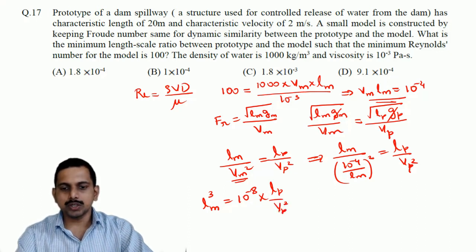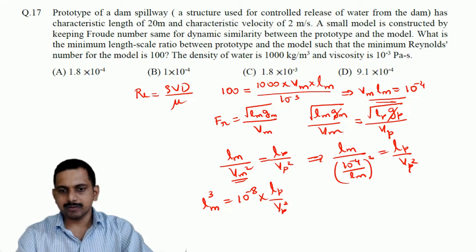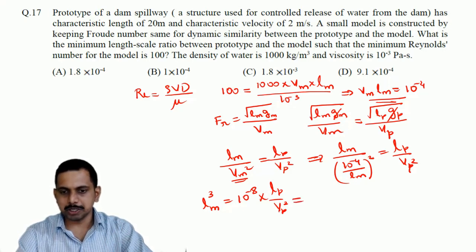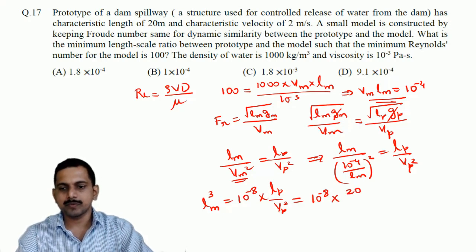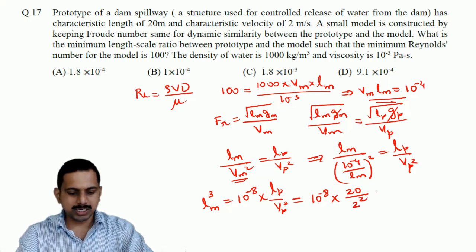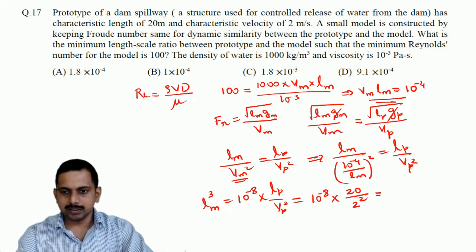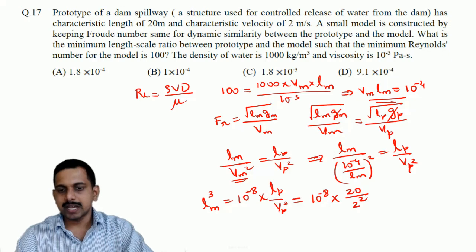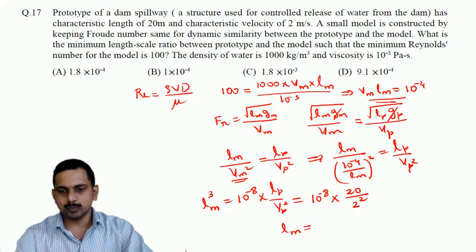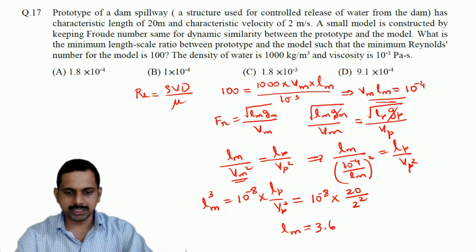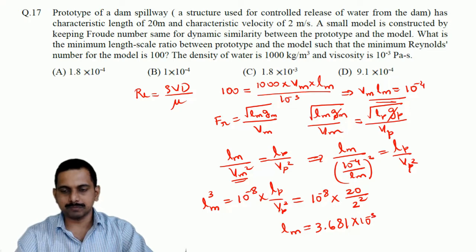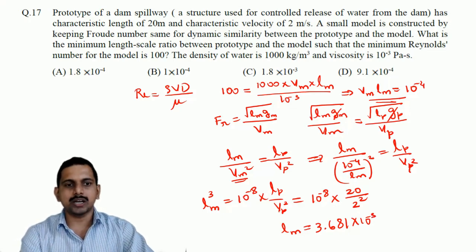So now by this we can write, let us substitute the things: 10 power minus 8, what is L P? L P of the prototype is 20 meters. What is V P? 2 meters square. When we calculate L M, which is cube root of this, we will get the answer as 3.681 into 10 power minus 3.